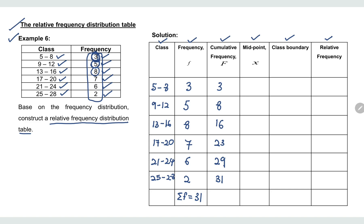Next, let's find the midpoint of each class. To find the midpoint, take the lower limit plus the upper limit divided by 2. For the first class: 5 plus 8 divided by 2 equals 6.5. For the second class: 9 plus 12 divided by 2 equals 10.5. Repeating the process, you should get 14.5, 18.5, 22.5, and 26.5 for the remaining classes.